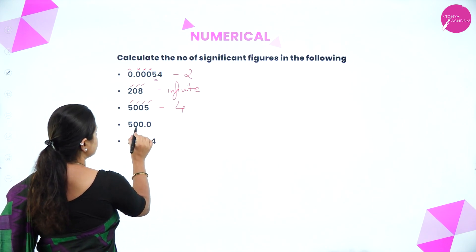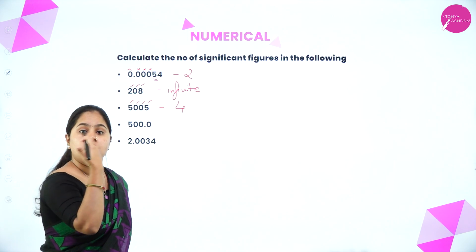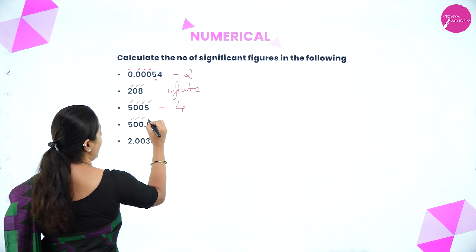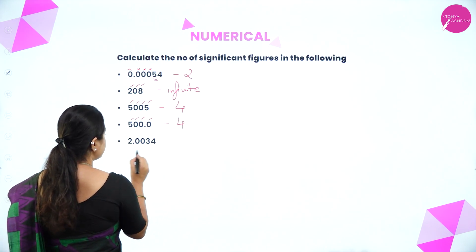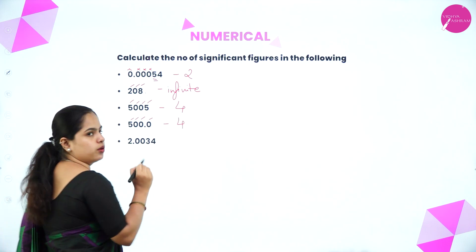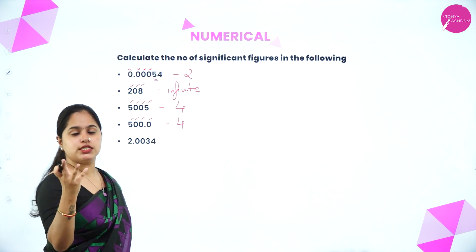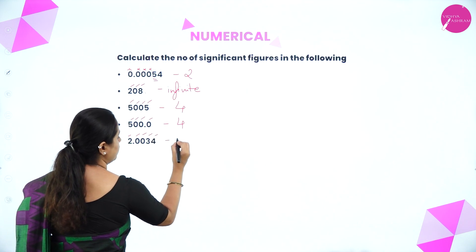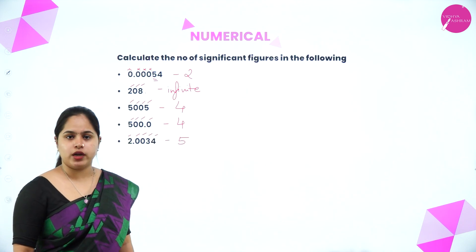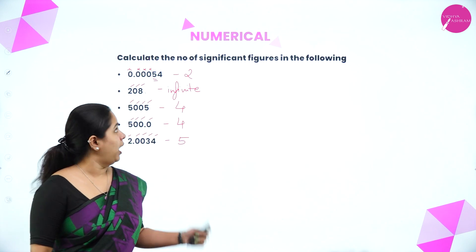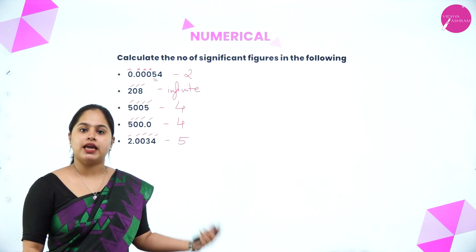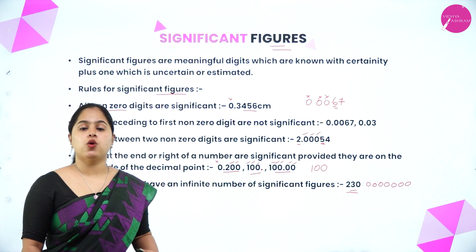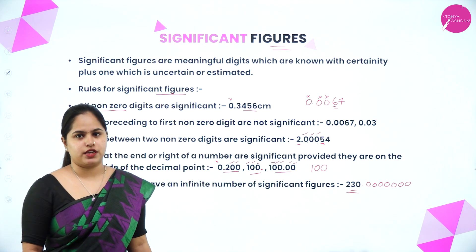For 2.0034: the zeros between two non-zero digits (2 and 3, then 3 and 4) are significant. So all five digits — 2, 0, 0, 3, 4 — are significant, giving five significant figures. I hope you are clear on how to calculate the number of significant figures using each of these rules.